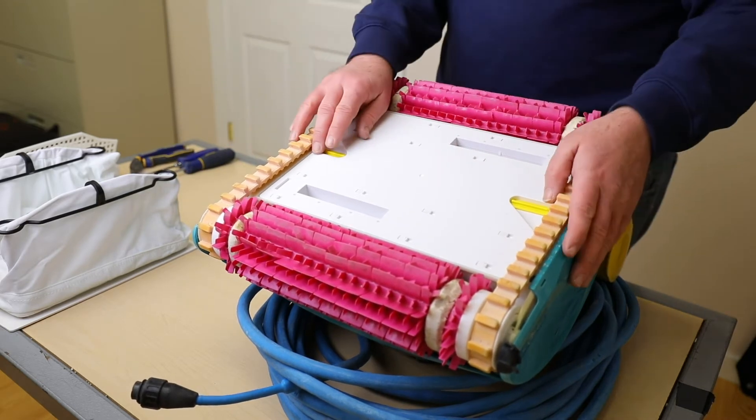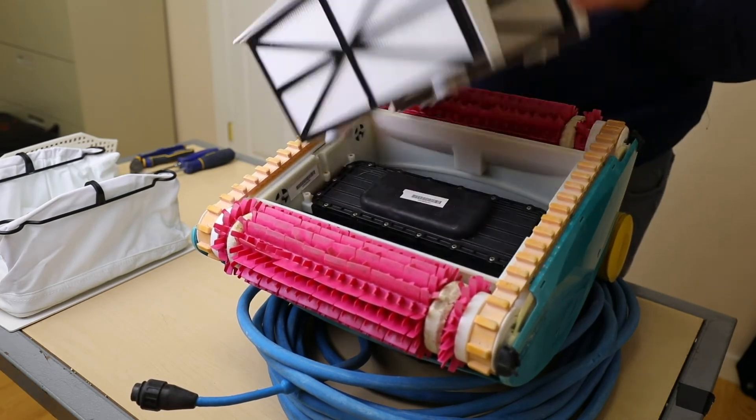Take out the filter tray on this model. That's done by turning the tabs on the underside of the robot and lifting the filter tray out.